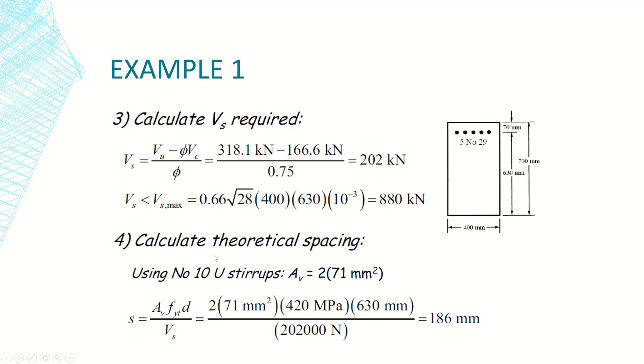Let's calculate the theoretical spacing. Since we are using number 10 stirrups, the area for each stirrup we have two legs, each leg has an area of 71 mm squared, so the total area of each stirrup is equal to double this number. Also from the code, the equation is s equals to Av which is 2 times 71, the yield strength of stirrups, d the effective depth, over Vs the value calculated here. Please pay attention for the units you are using in your calculations. So by applying this equation we can see that s is equal to 186 millimeters.